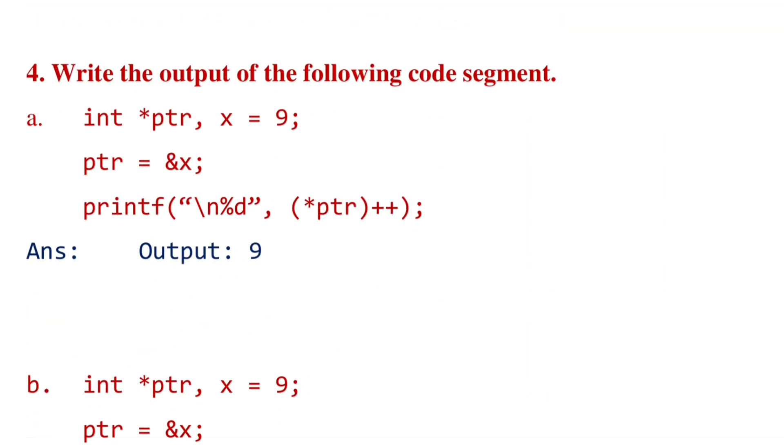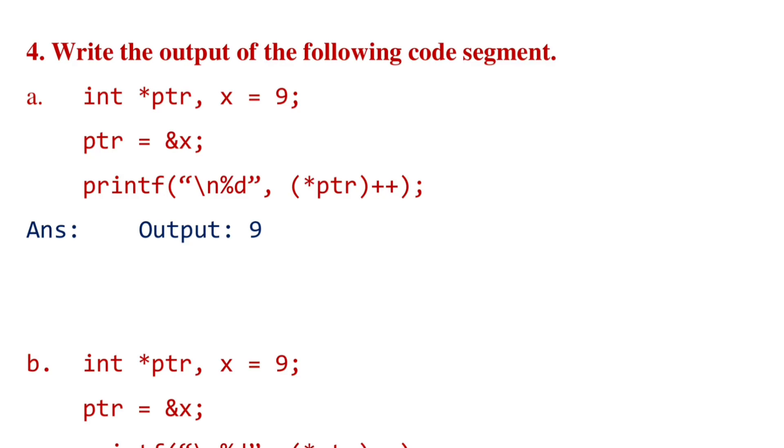Now find the output. The first one: int star ptr, x equals 9. Here ptr is initialized to the address of x. We will get the output as 9 because in the printf statement percent d is written, so we'll get the value of variable x, that is 9. But in printf, the plus plus operator is there, and the increment operator is after, means after displaying the value 9, the value of pointer will increase by one. But we already got the output, so we will not get the updated value of that variable.